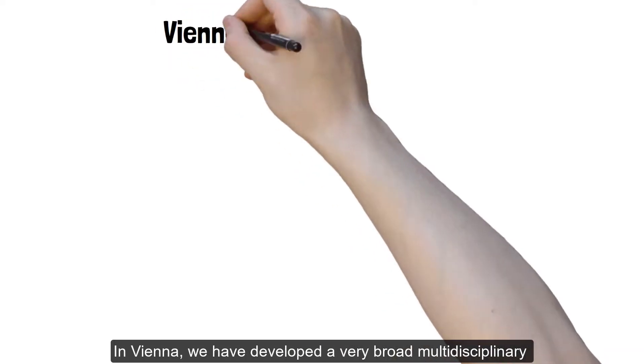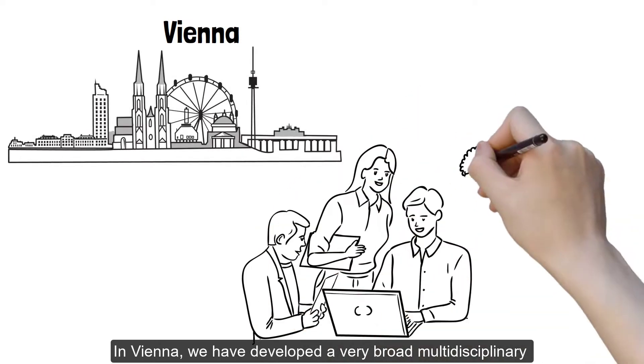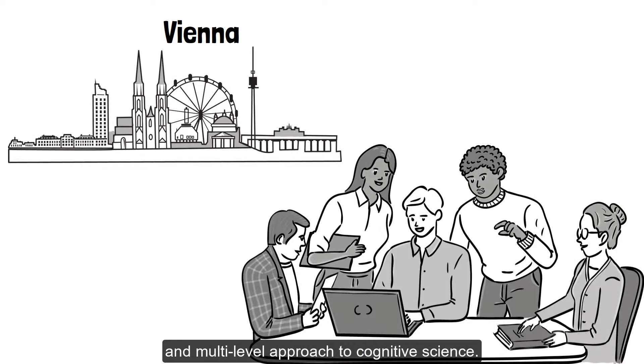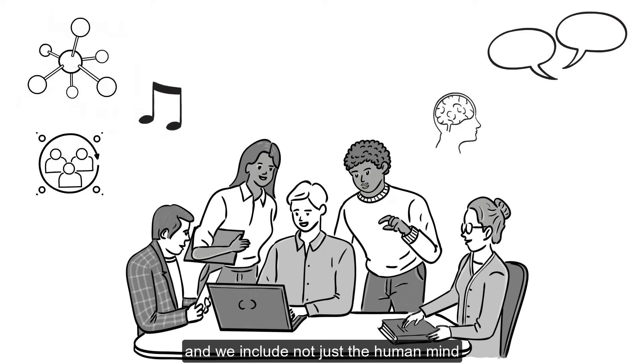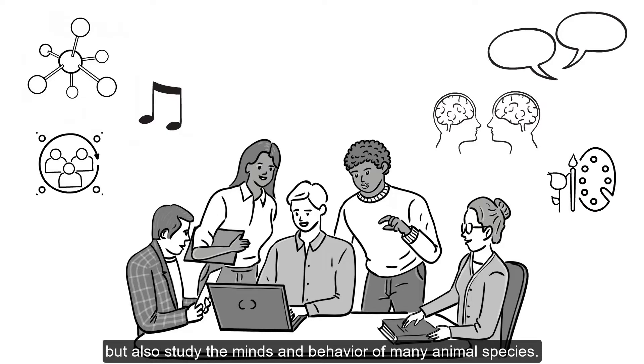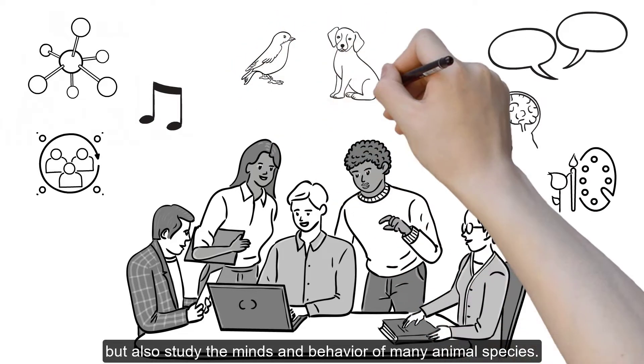In Vienna, we have developed a very broad, multidisciplinary and multilevel approach to cognitive science. This spans from molecules to the humanities, and we include not just the human mind, but also study the minds and behavior of many animal species.